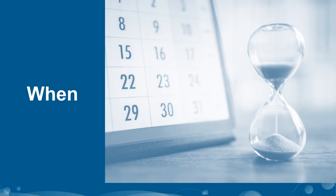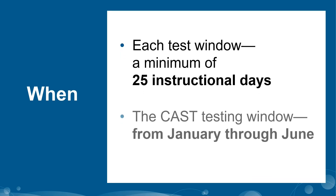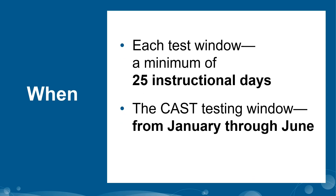When are these assessments taken? For your local school or district, the test will be administered during the school's selected testing window as determined by the LEA CAASPP coordinator — after 66% of the instructional year for the LEA has passed. Each test window is a minimum of 25 instructional days, and the CAST testing window runs from January through June.